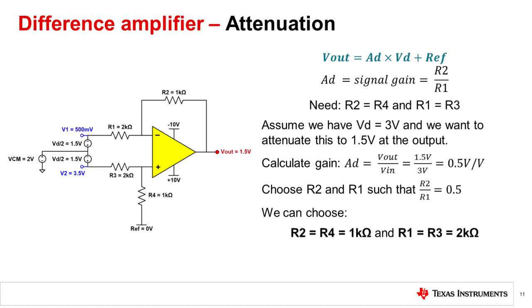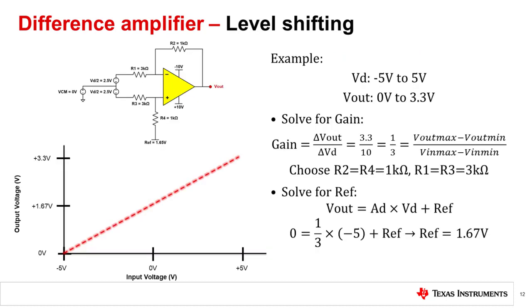Let's now take a look at an example which utilizes the reference pin to level shift the output of the amplifier to a usable level. Most analog-to-digital converters, or ADCs, have a unipolar input like 0 to 3.3 volts or 0 to 5 volts. However, the circuit preceding this can have bipolar inputs like negative 5 volts to positive 5 volts. Bringing an ADC input below ground can cause irreversible damage. Assume we have an input signal of negative 5 volts to positive 5 volts and we would like to process this with a 3.3 volt ADC. When Vin equals negative 5 volts, we want 0 volts at the output; when Vin equals positive 5 volts, we want positive 3.3 volts at the output. The gain AD equals 3.3 divided by 10, or 1/3.